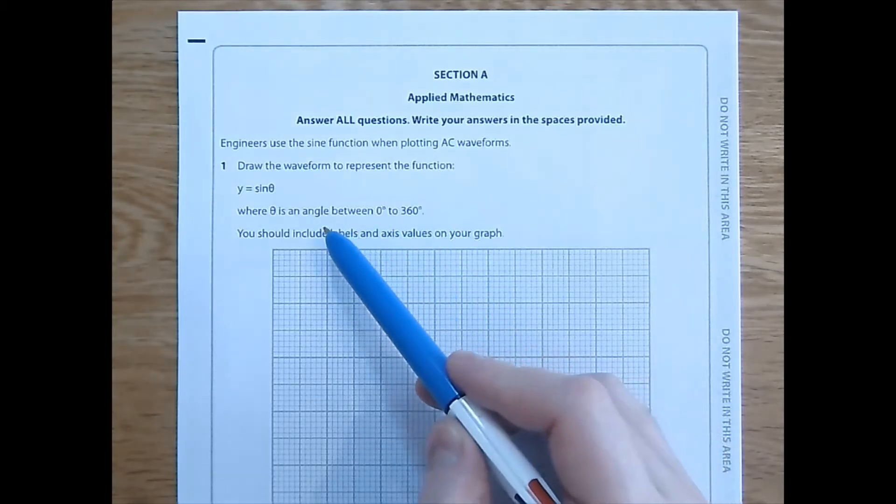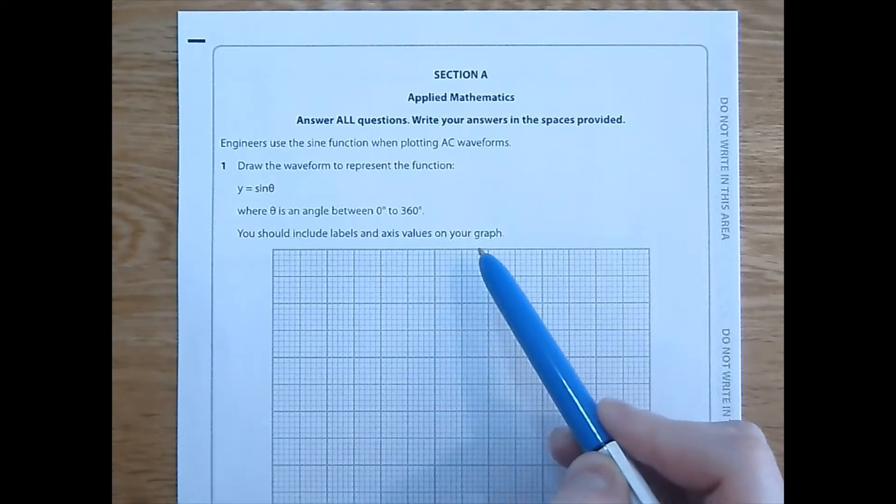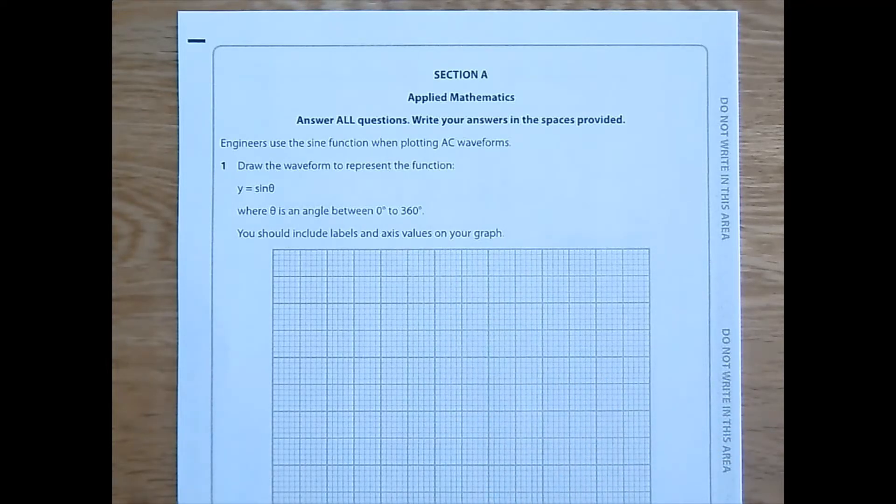Okay, units are degrees, good to know. You should include labels and axis values on your graph. Okay, rather than draw this live, Blue Peter style, here's one that I made earlier.